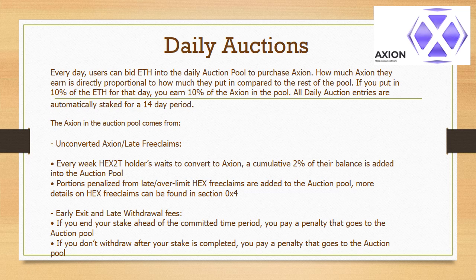80% of the ETH paid in the auction is then used to hyperdrive both the Axion token and the staker's earnings. First, the ETH is used to purchase the tokens, boosting the token price, and then those tokens are distributed to stakers, creating a very strong positive feedback loop.